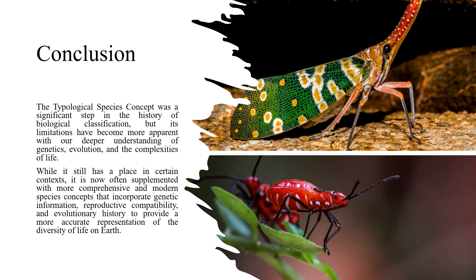In conclusion, the typological species concept was a significant step in the history of biological classification, but its limitations have become very apparent with our deeper understanding of genetics, evolution, and the complexities of life. While it still has its place in certain contexts, it is now often supplemented with more comprehensive and modern species concepts that incorporate genetic information, reproductive compatibility, and evolutionary history to provide a more accurate representation of the diversity of life on Earth.